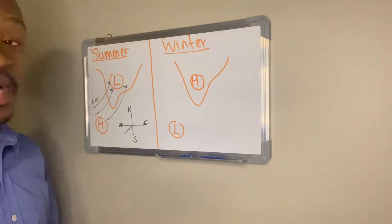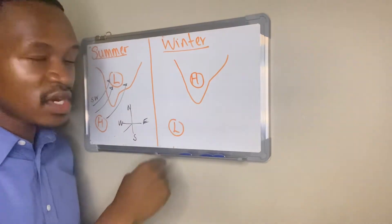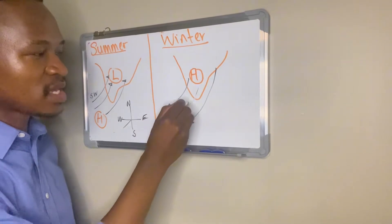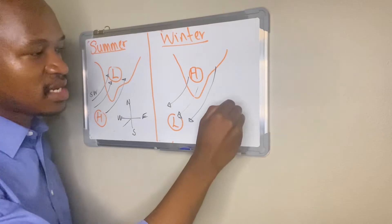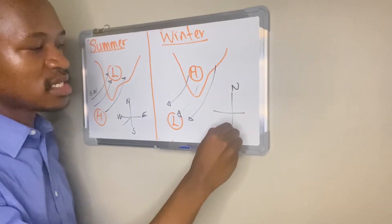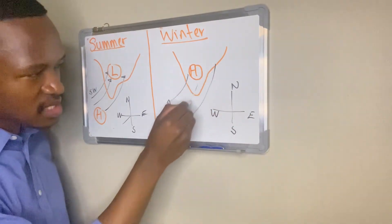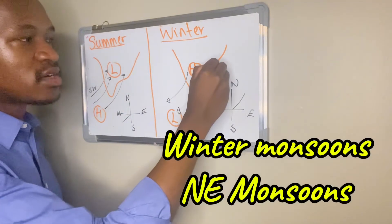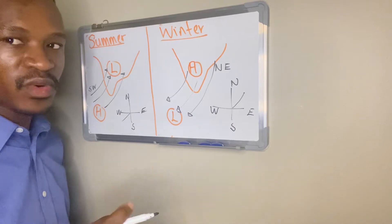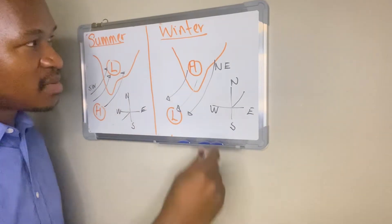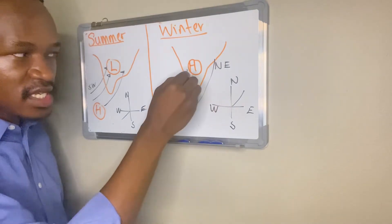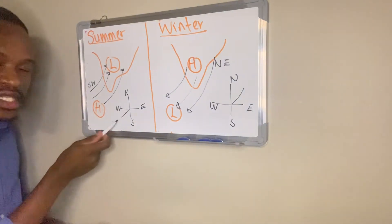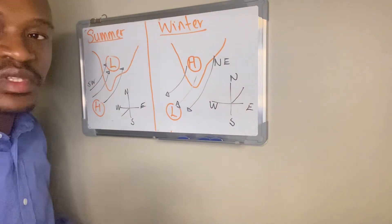Now let's look at our winter monsoons. Wind will always blow from a high pressure to a low pressure. Looking at the direction of these winds — north, south, west, east — we are coming from the northeast direction. So winter monsoons are also known as northeast monsoons, because we name winds based on the direction they come from. Winter monsoons come from a northeast direction, while summer monsoons come from a southwest direction, so they are known as southwest monsoons.